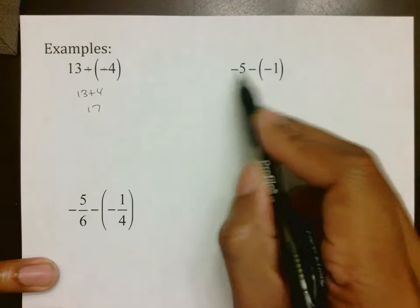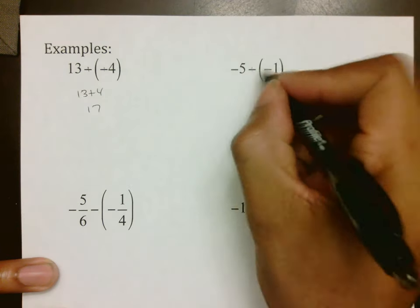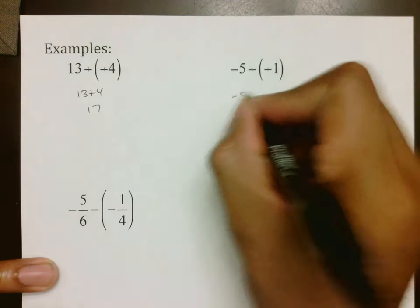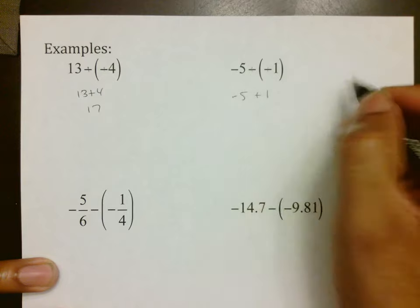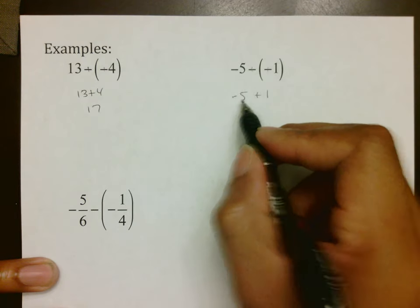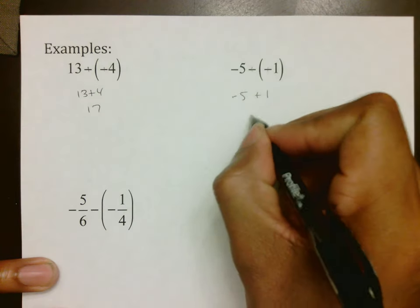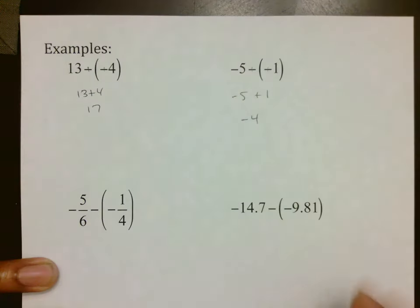If you saw negative 5 minus negative 1, the first thing I would do is know that we're going to switch that to be negative 5 plus 1, which now we know they're competing, so the difference is 4, the 5 is bigger, which makes it negative 4.